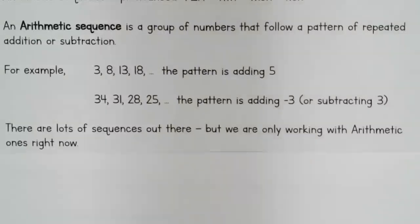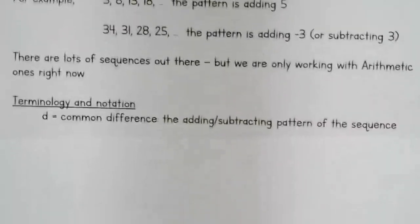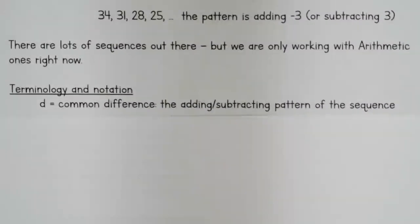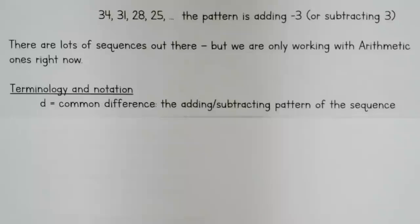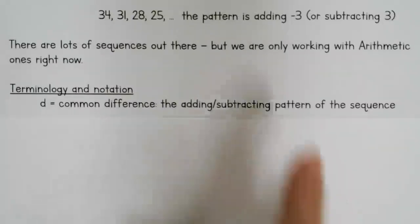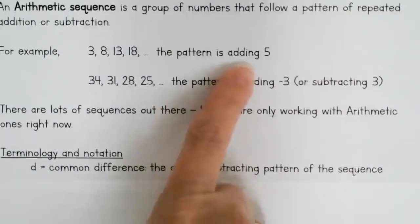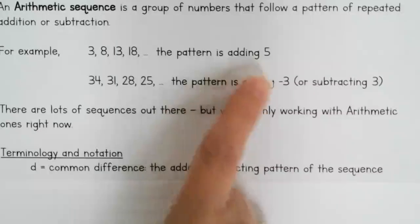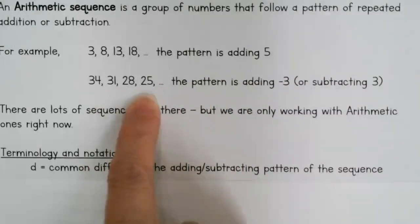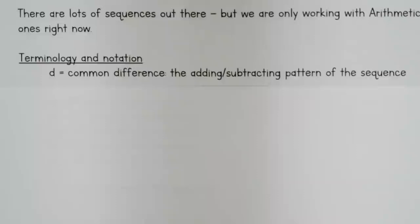Now we're going to look at some terminology and notation. There are specific variables we use when dealing with arithmetic sequences, so you'll want to make sure you get these down — they'll be important once we get into the equations. 'd' is the common difference, which makes sense. Up here the pattern was adding five each time, so d equals five. For the second example, the pattern was subtracting three, so d is negative three. The d is the actual number we're adding or subtracting each time.